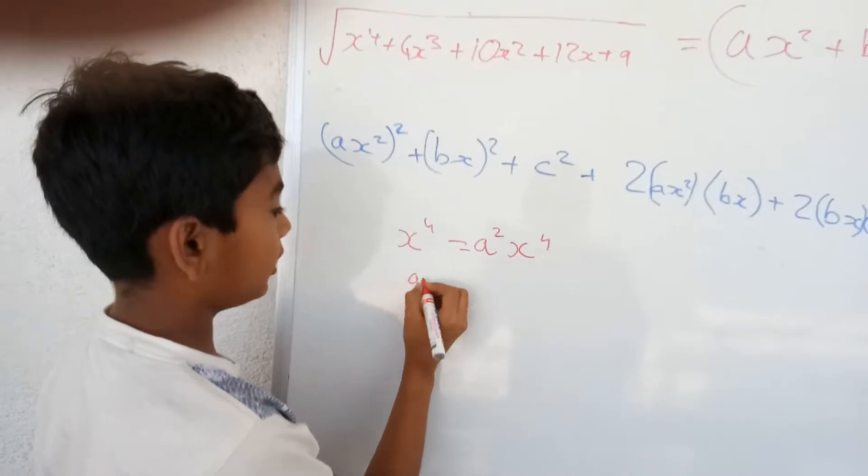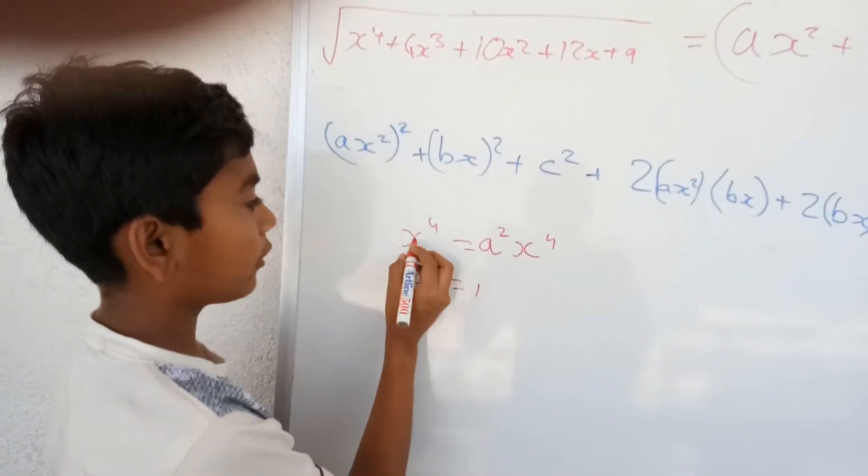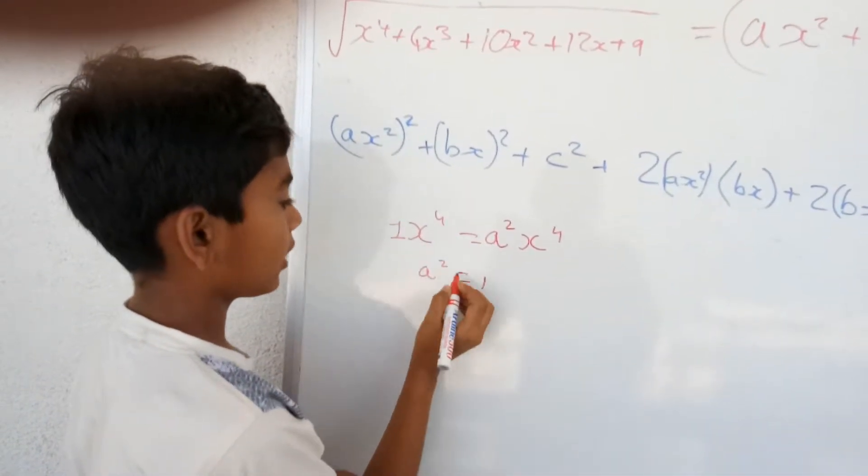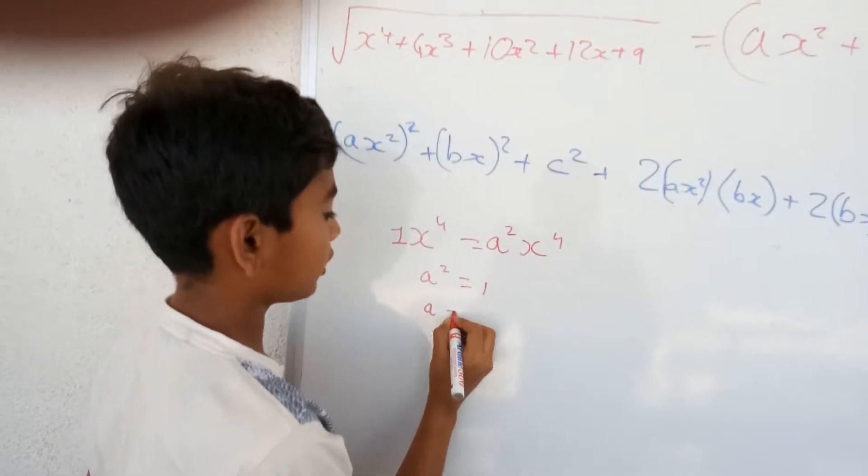A square is equal to 1 because the coefficient of this is 1. Therefore, a is also equal to 1.